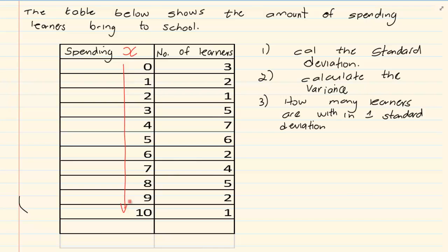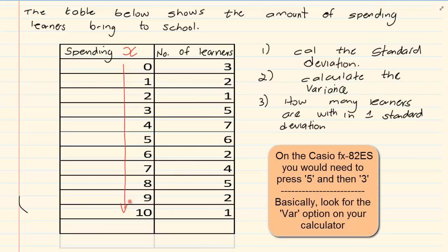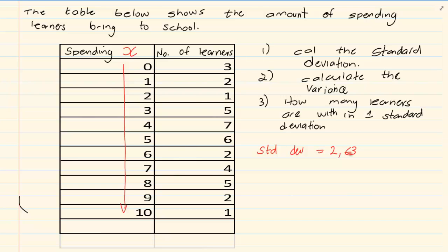You are going to press Shift 1, go to number 4 which is variance, and you are going to press number 3 which is standard deviation. That is equal to — so using your calculator, you get the answer that the standard deviation is equal to 2.63. On the calculator it says 2.627, but we are rounding off to two decimal places, so it is 2.63.